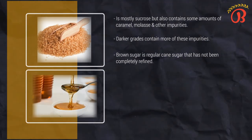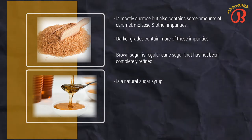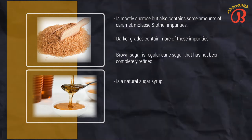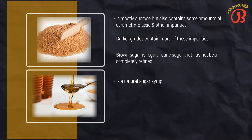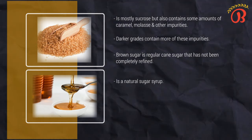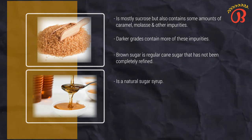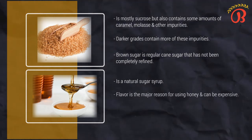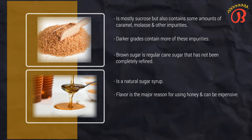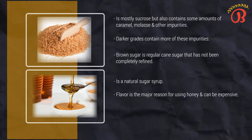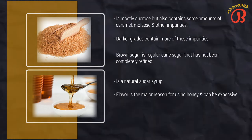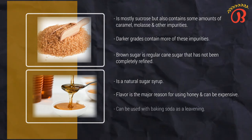Honey is a natural sugar syrup consisting largely of the simple sugars glucose and fructose, plus other compounds that give it its flavor and color. Honey varies considerably in flavor and color depending on its source. Flavor is a major reason for using honey, especially as it can be expensive. Because honey contains invert sugar, it helps retain moisture in baked goods. Like molasses, it contains acid, which means it can be used with baking soda as a leavening agent.